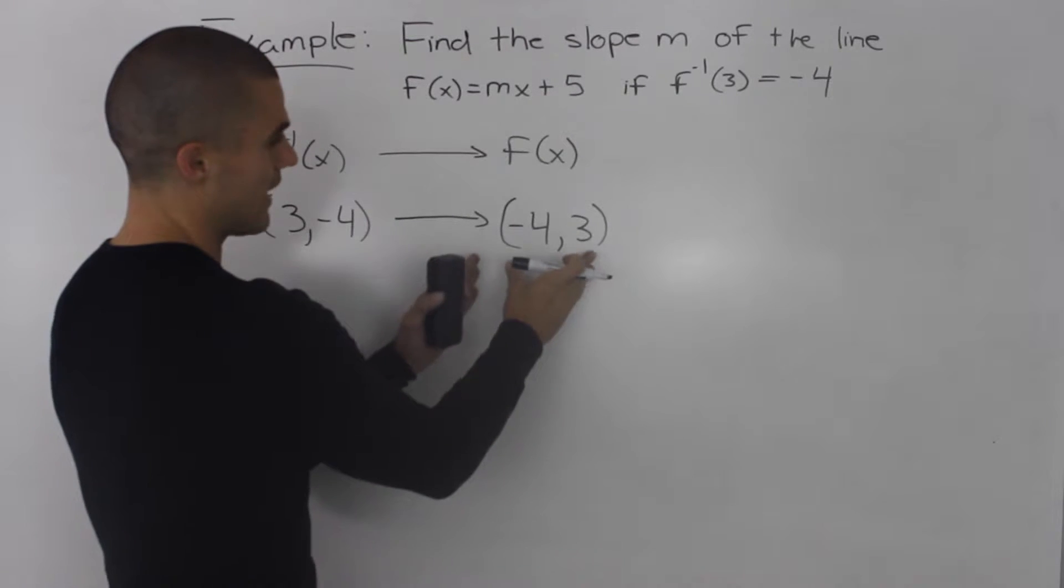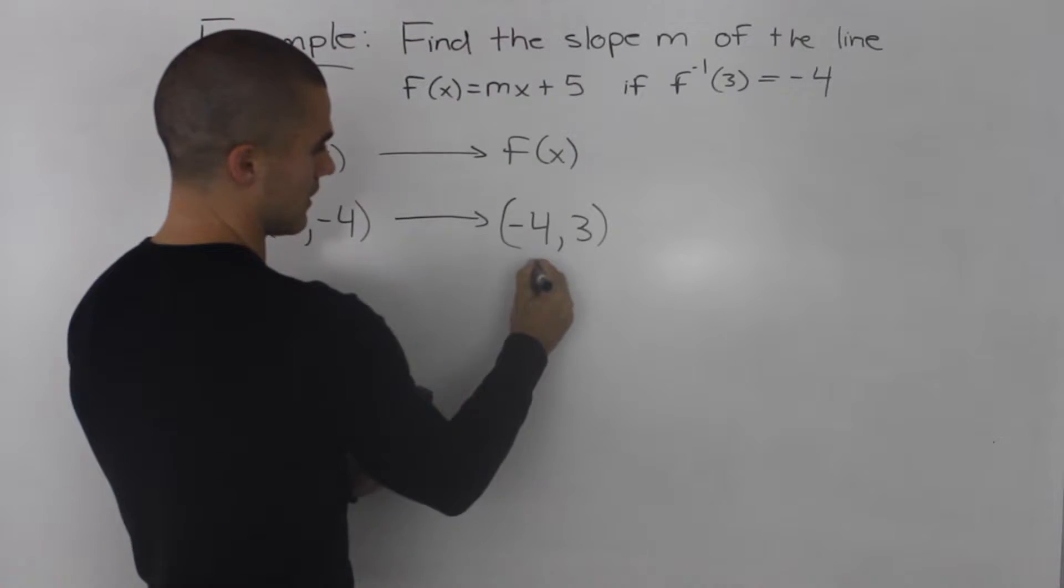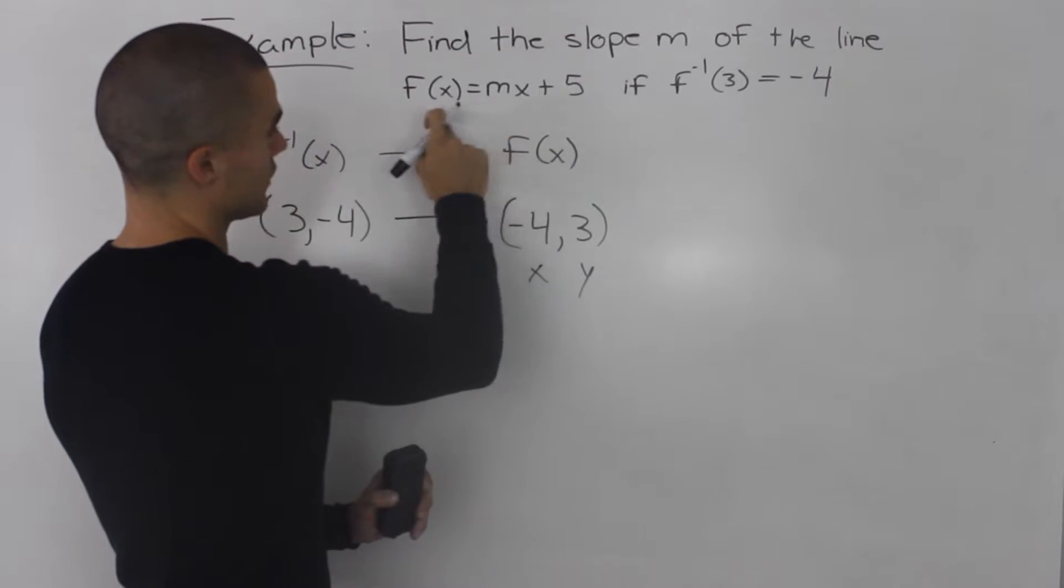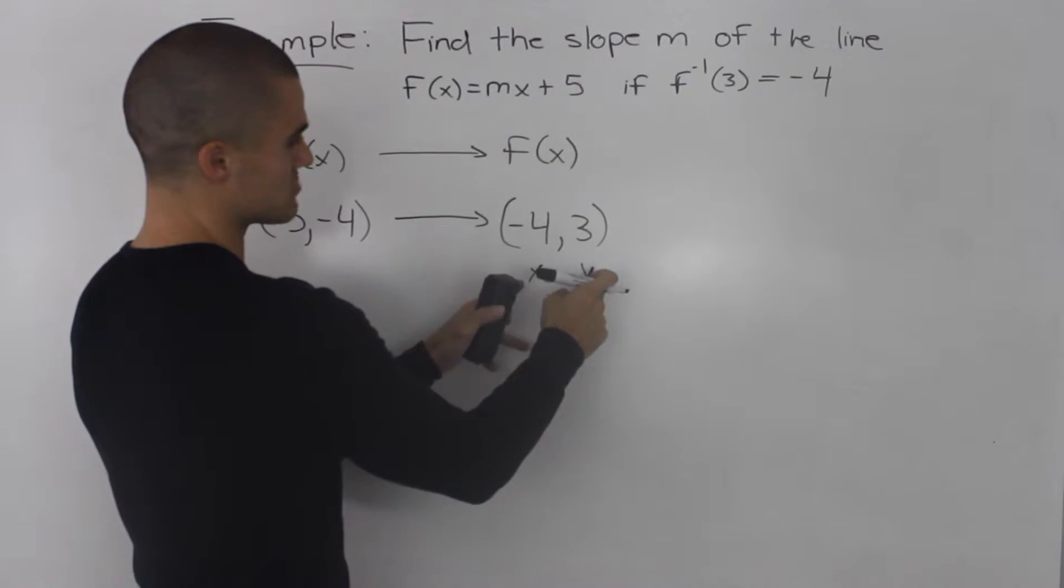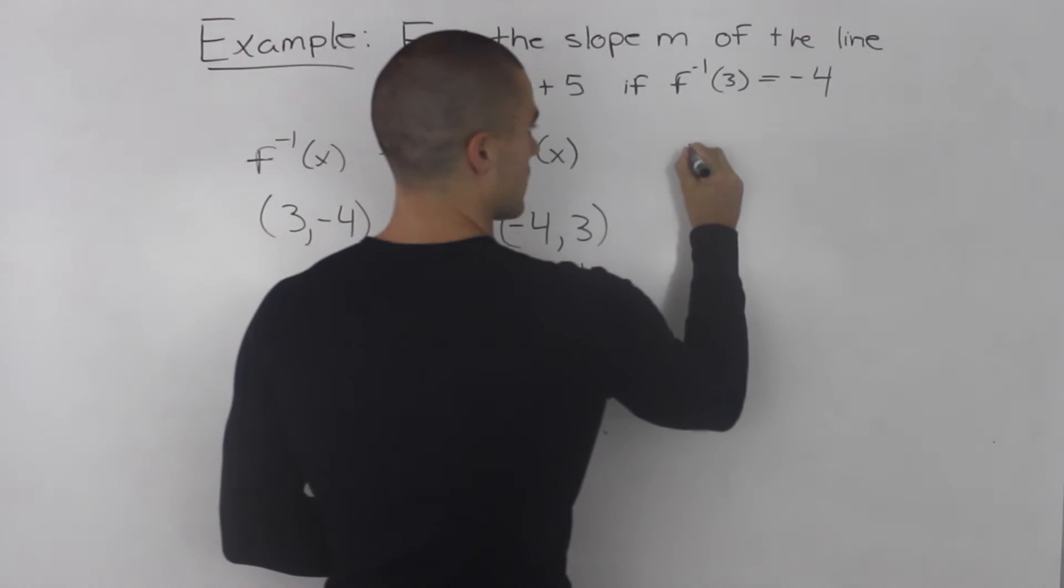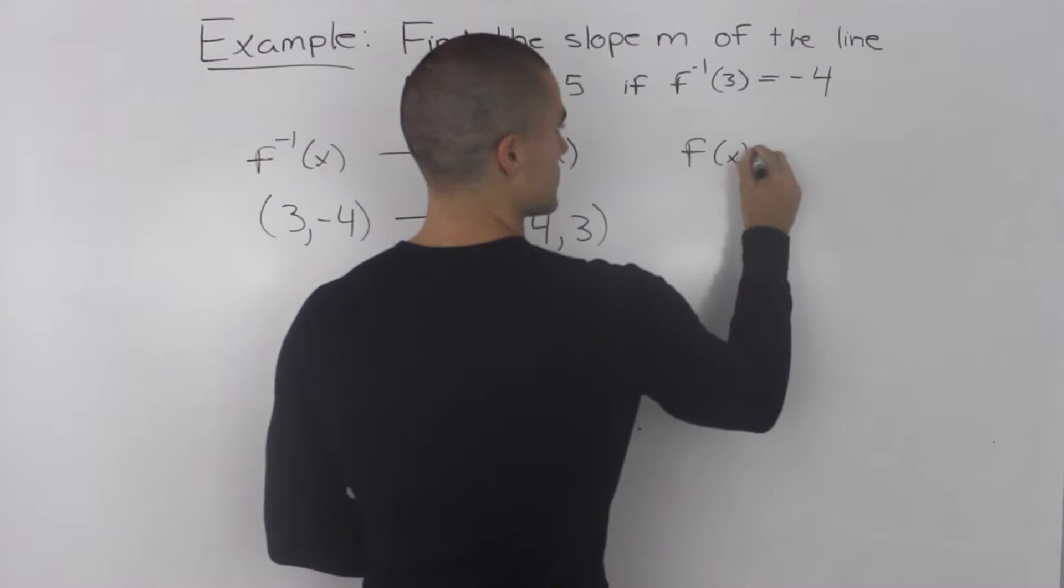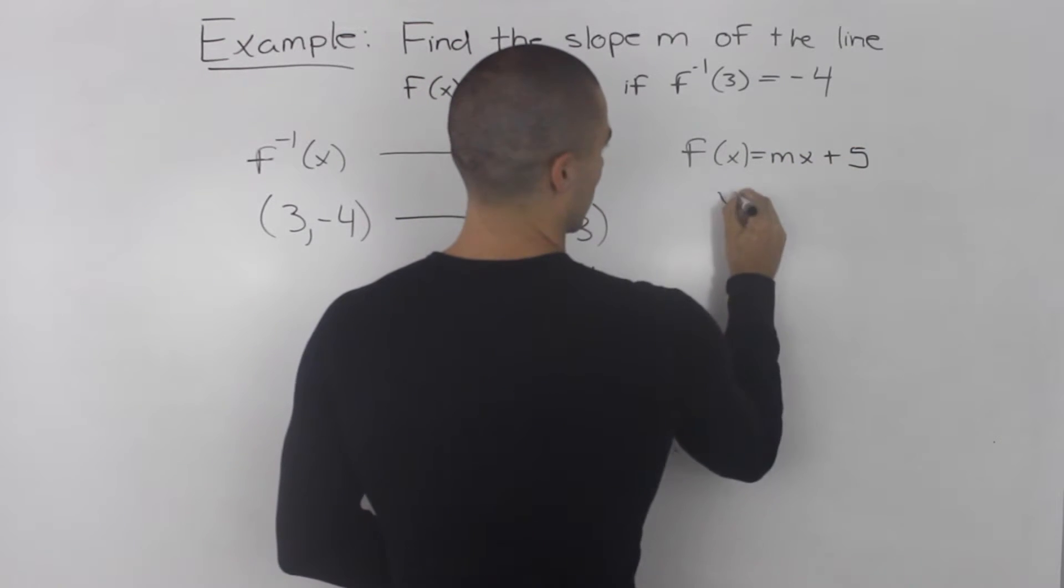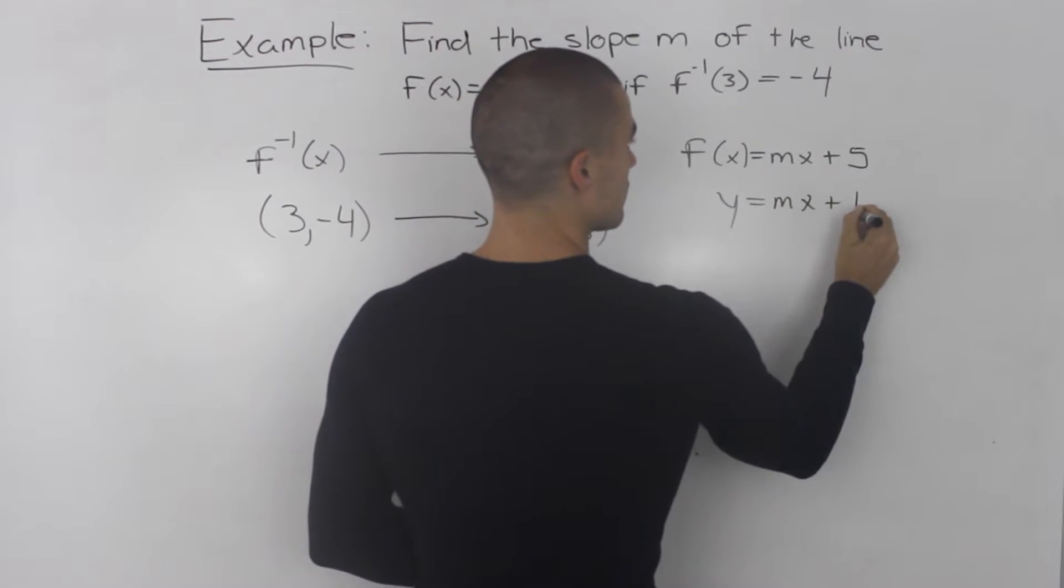And now since we have a coordinate, this would be the x value, this would be the y value on our original function f(x), we could just plug in this coordinate here and then solve for m. So f(x) = mx + 5, or let's rewrite it as y = mx + 5.